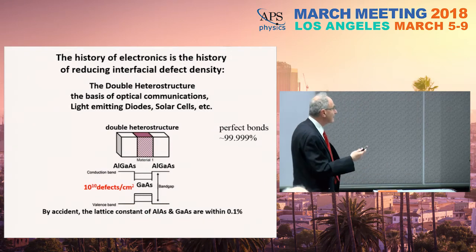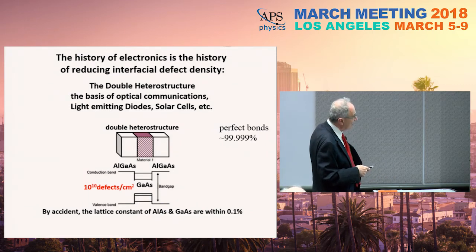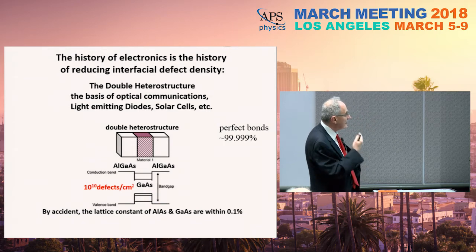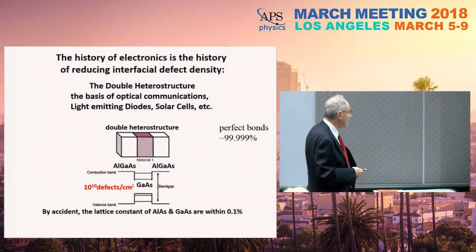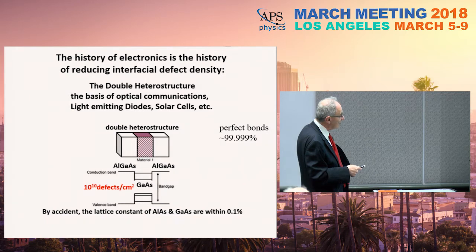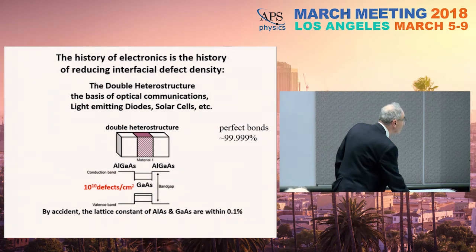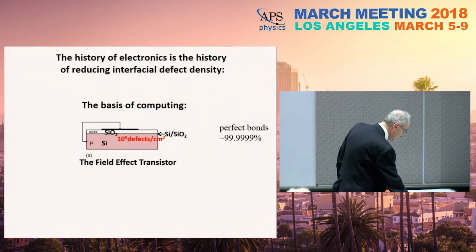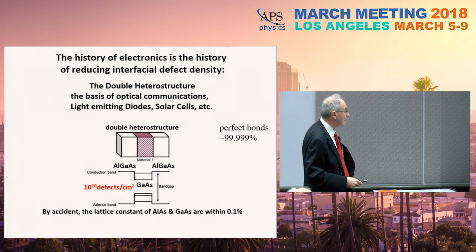Of equal amazing importance is another thing. Most of the good things come from accidents of nature. There's an accident in nature that the lattice constant of aluminum arsenide and gallium arsenide is within one-tenth of a percent — even though the aluminum atom is a lot smaller than the gallium atom. What that means is that if you grow these layers, you'll get all the chemical bonds matching at the interfaces. If they match, you'll have very few defects — about 10 to the 10 defects per square centimeter, compared to maybe 10 to the 9 in silicon.